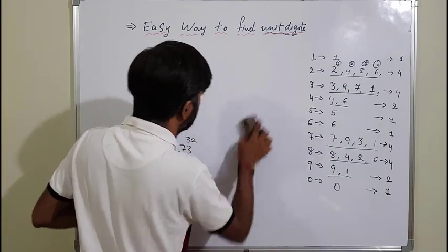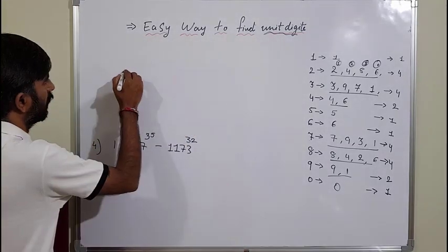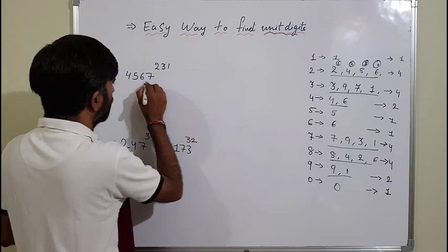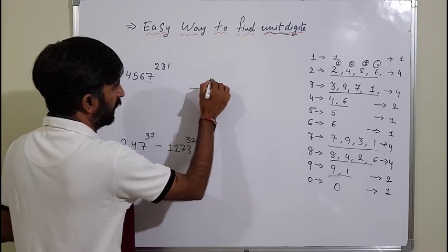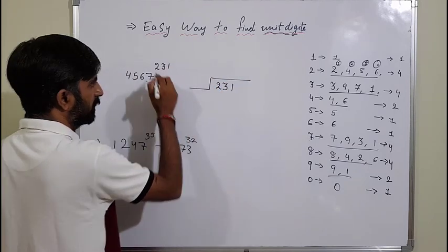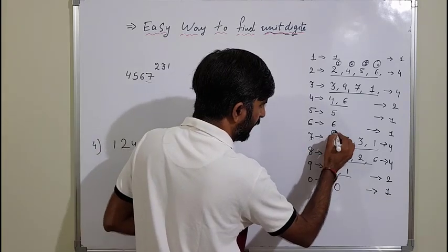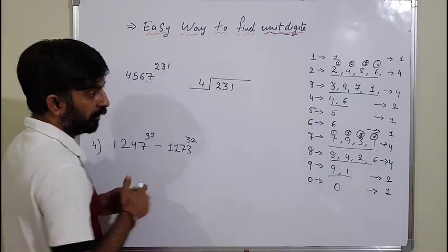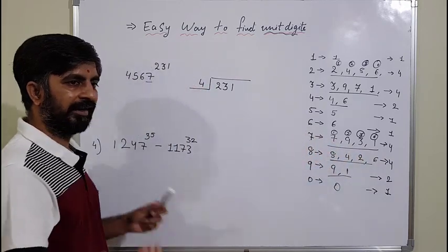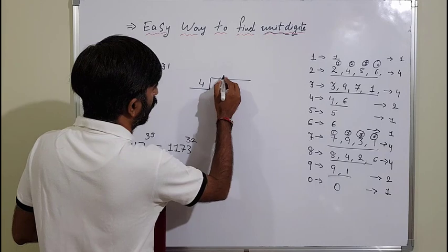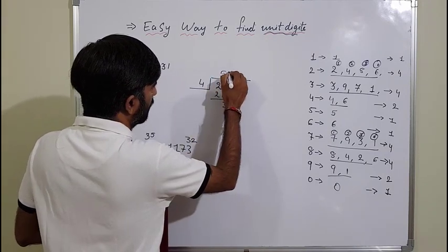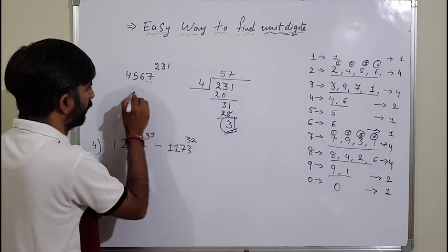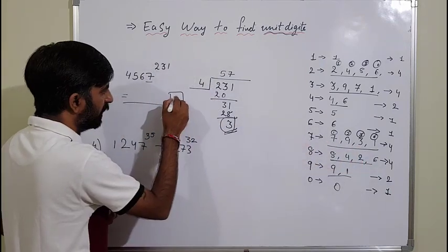Let's take 74567 raised to 231. The last digit is 7, so there are 4 possibilities — divide the power by 4. Remember: remainder 1 → unit digit 7; remainder 2 → unit digit 9; remainder 3 → unit digit 3; remainder 0 → unit digit 1. Dividing 231 by 4: 4 × 57 = 228, remainder is 3. So the unit digit is 3.